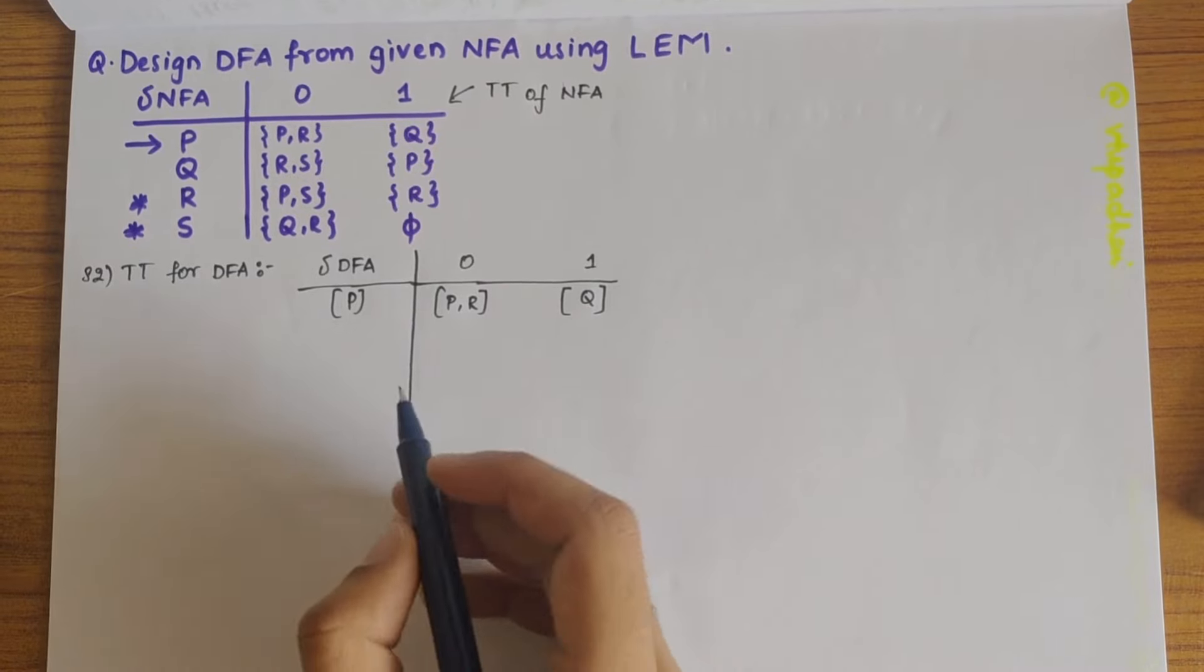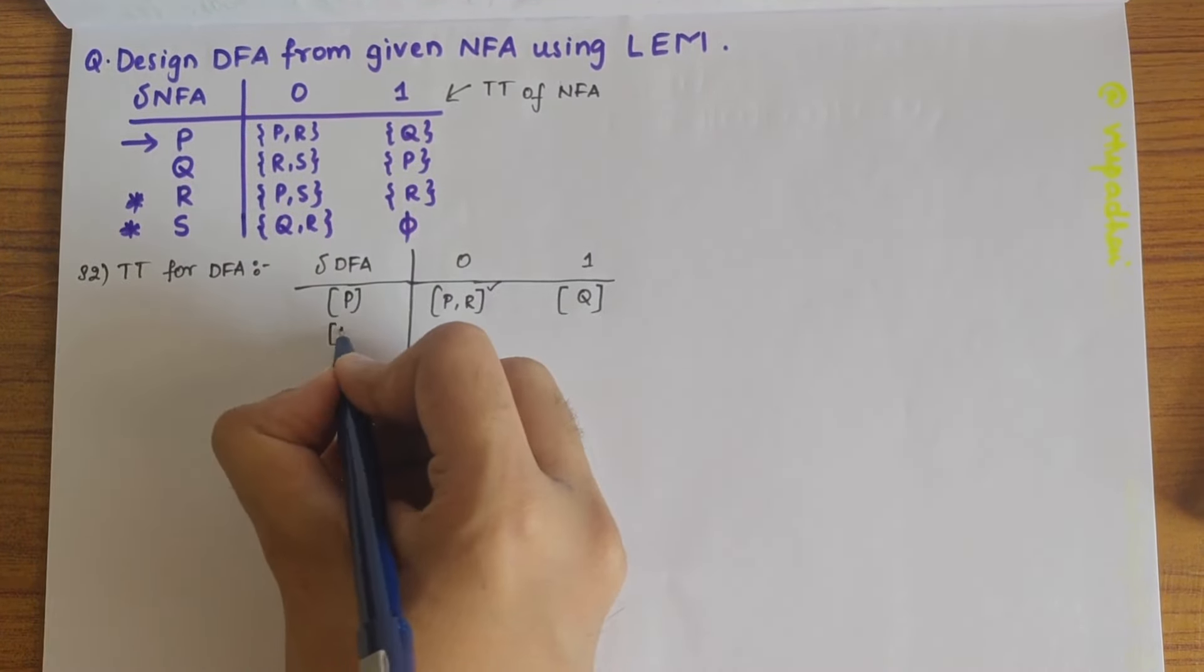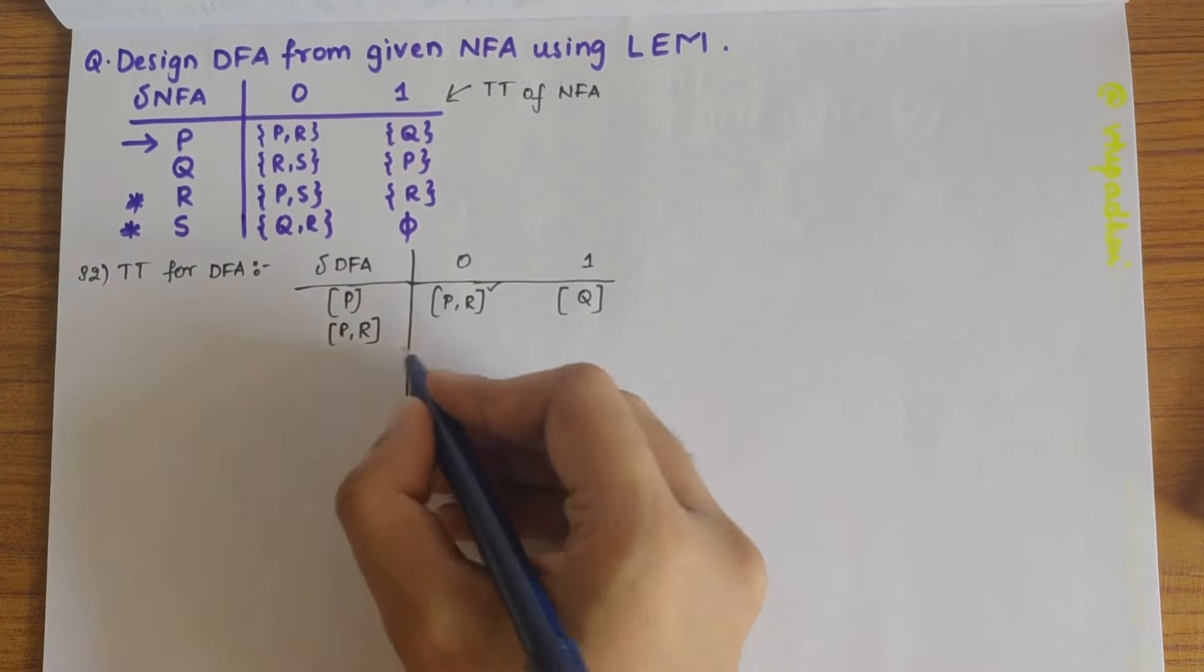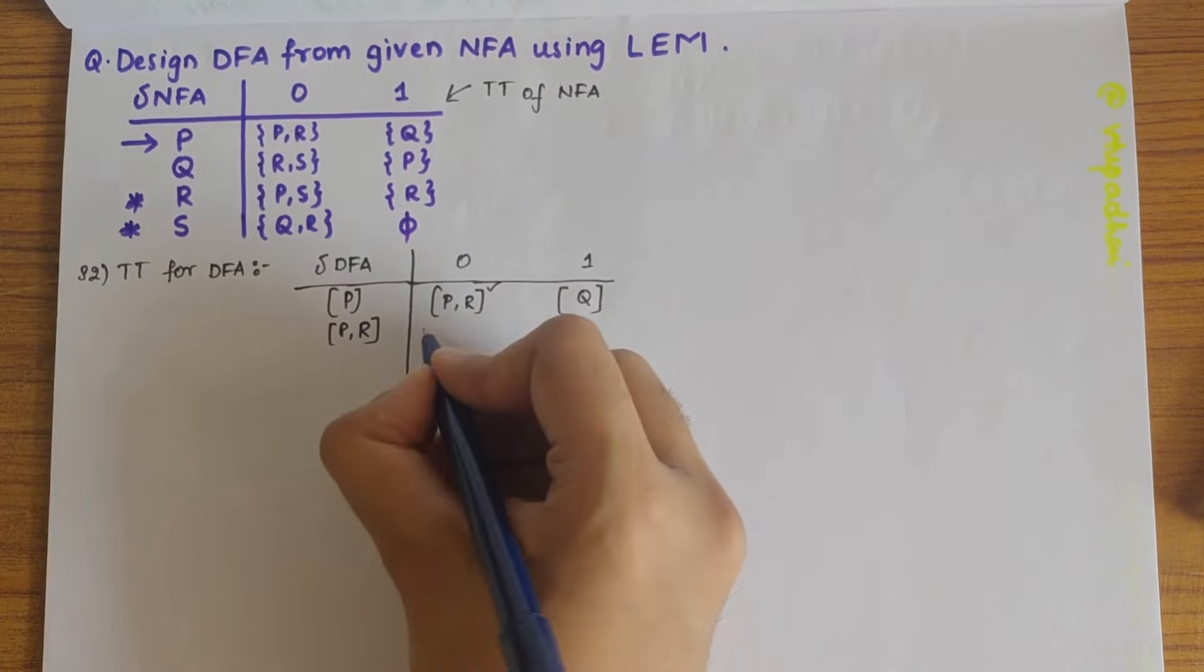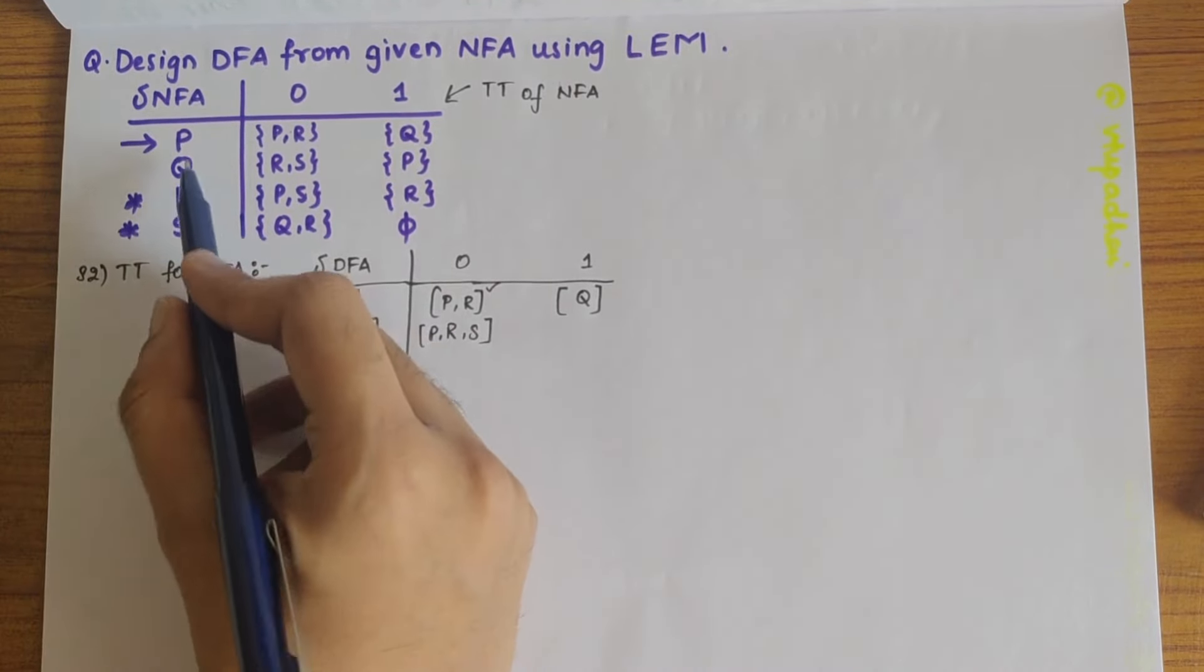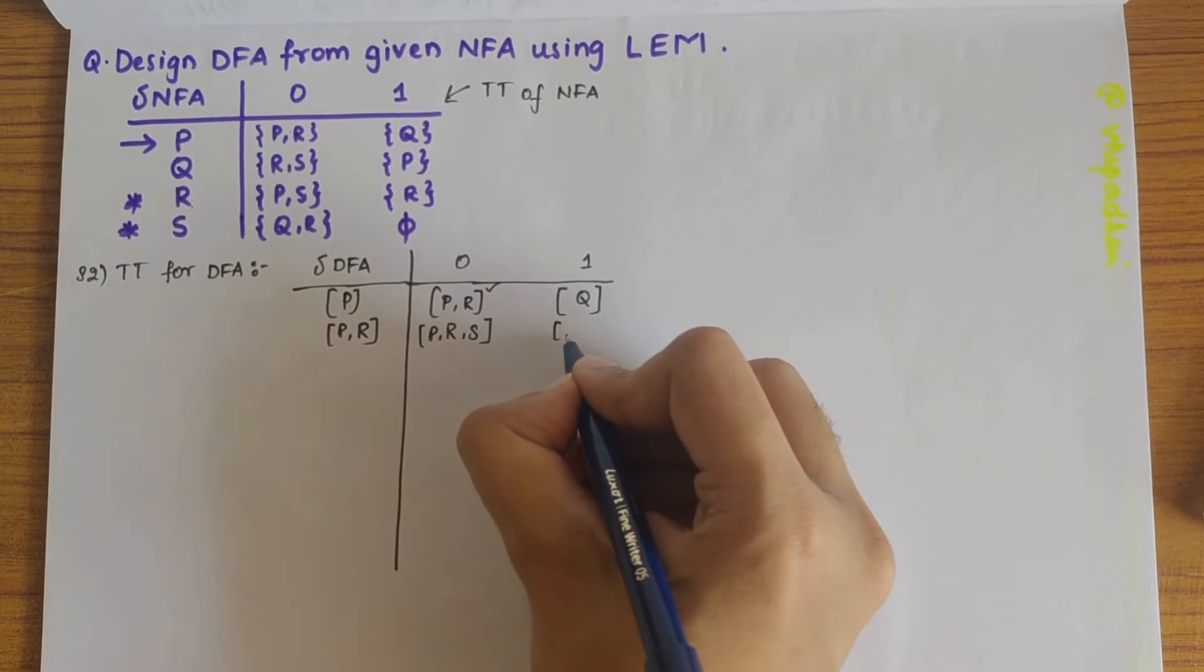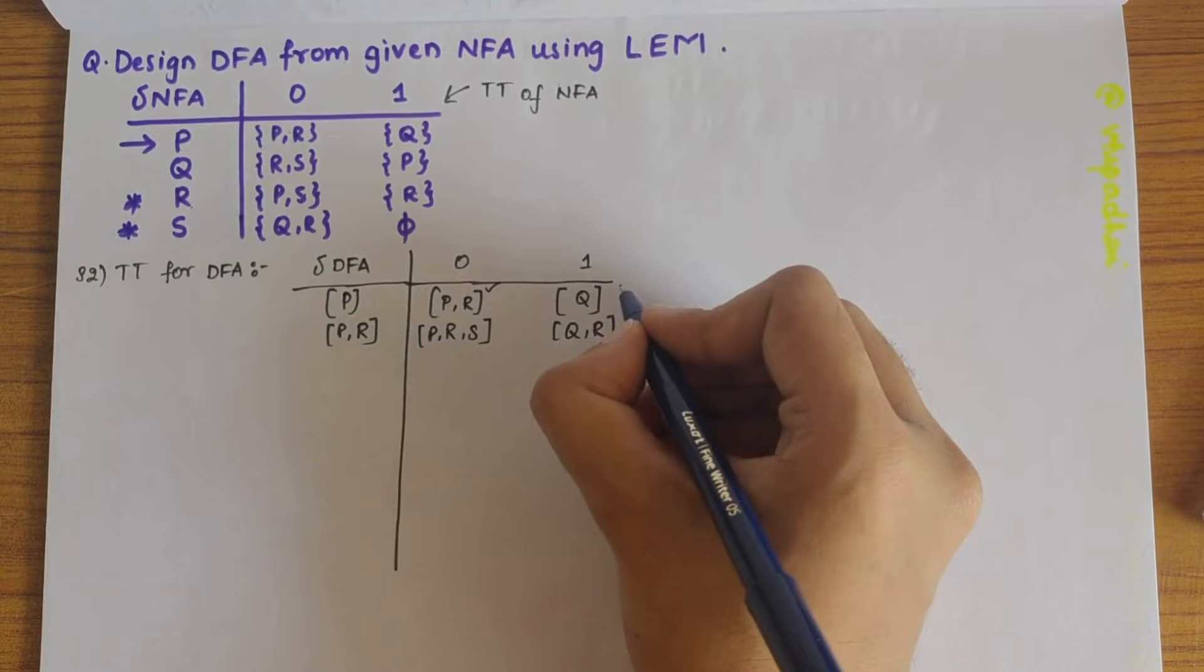So from here on, we have to take, so we have defined P, we have to take PR here. PR on 0, it's PR and PS. So it will be PR and S. So PR on 1, it's Q and R. So now we have, PR is defined on both the states.